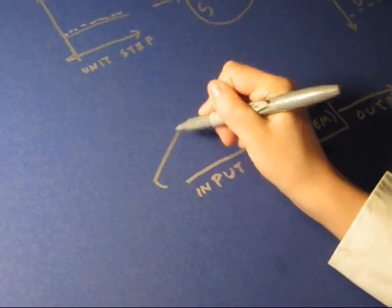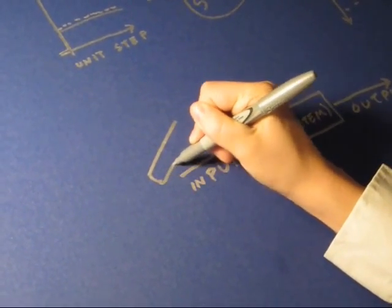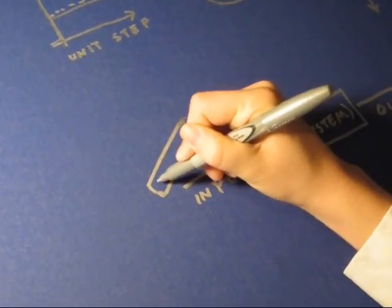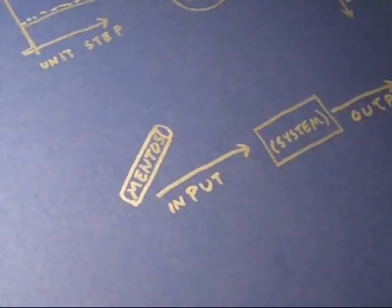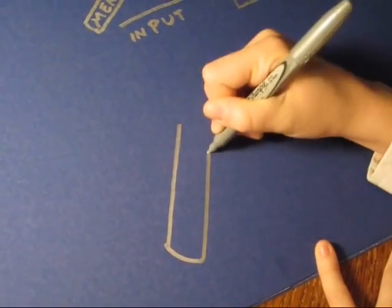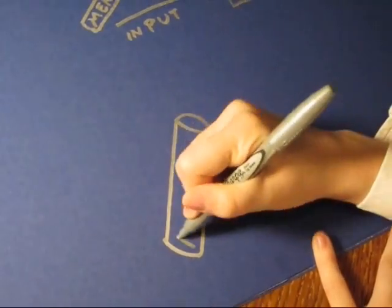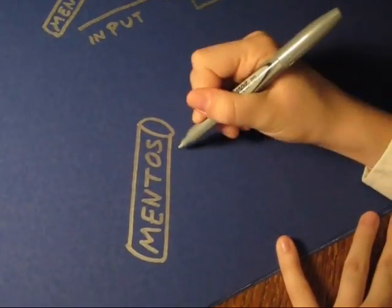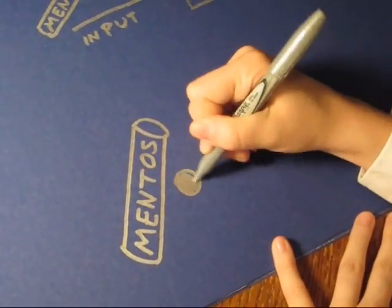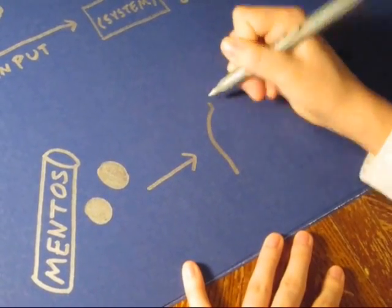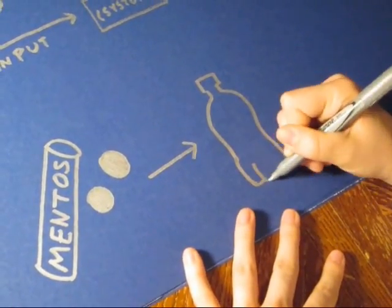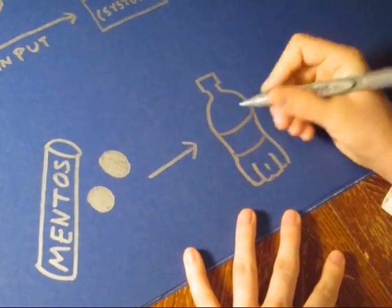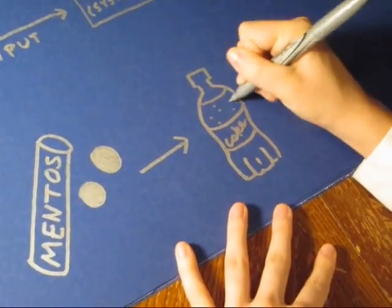Our input for this myth is a sleeve of Mentos and we're trying to make an unbounded output. And this is our black box. We will put Mentos — our input — into a Diet Coke — our system — and see if we can achieve an unbounded output.